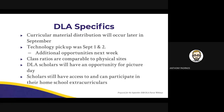Regarding class size ratios: at the elementary level, at kindergarten it's somewhere in the low to mid twenties, and by fifth grade you get towards the upper twenties. In sixth through 12th grade, it's about 33 to 35 students per class as the average class size at the secondary level.